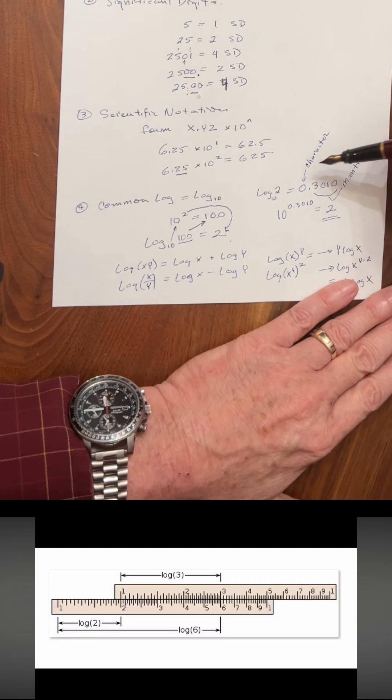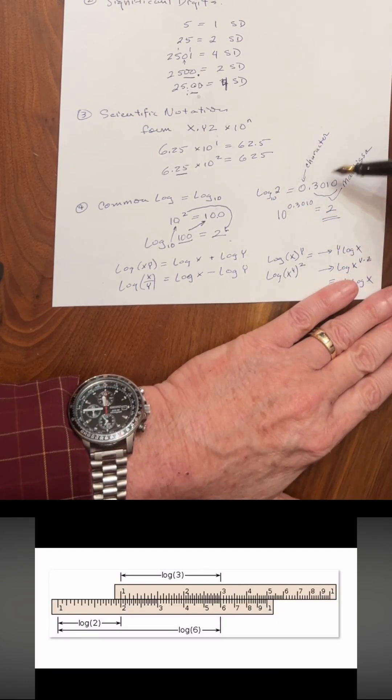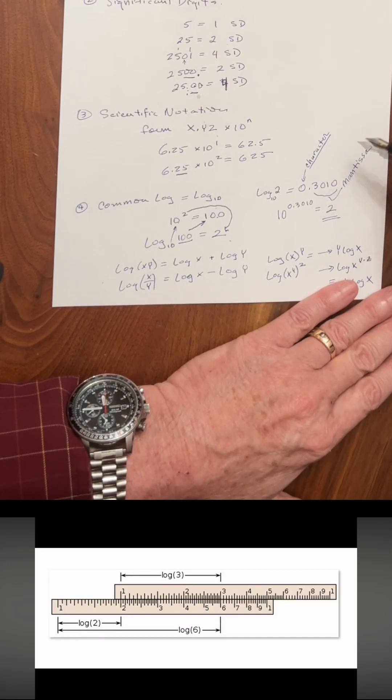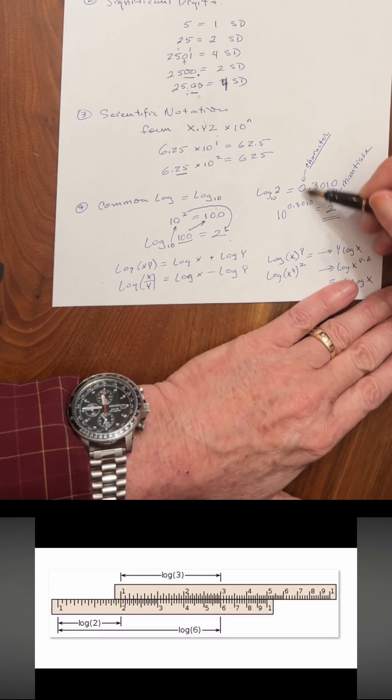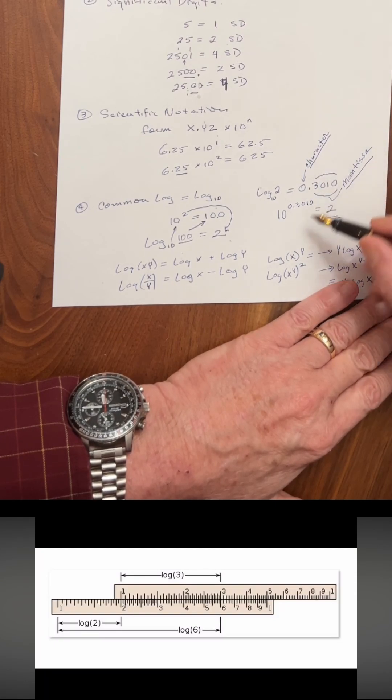This becomes important when we look at other numbers. For example, log base 10 of 2 equals 0.3010. The magnitude of the number is called the characteristic. This would be 10 to the 1, 10 to the 0, 10 to the 5, whatever. The 3010 is called the mantissa, and that refers to the logarithm of 2.